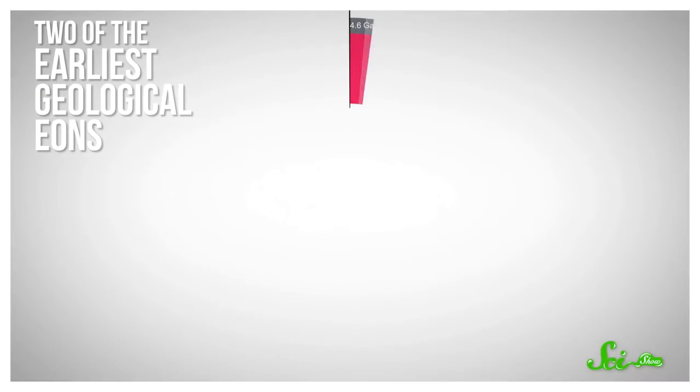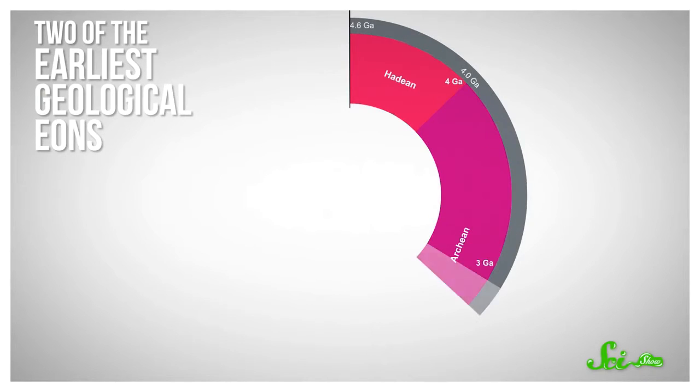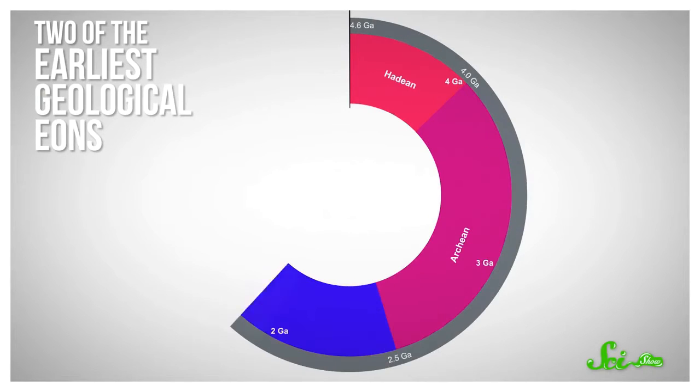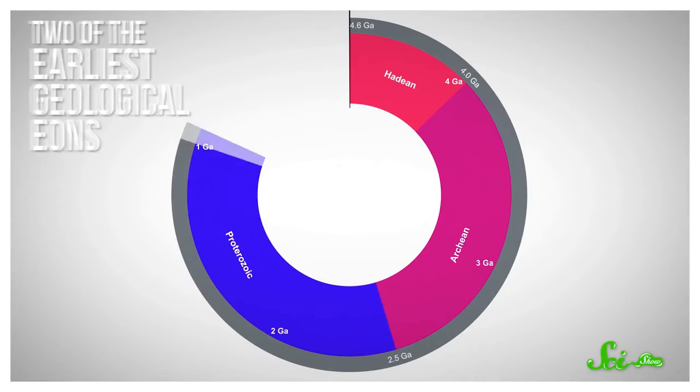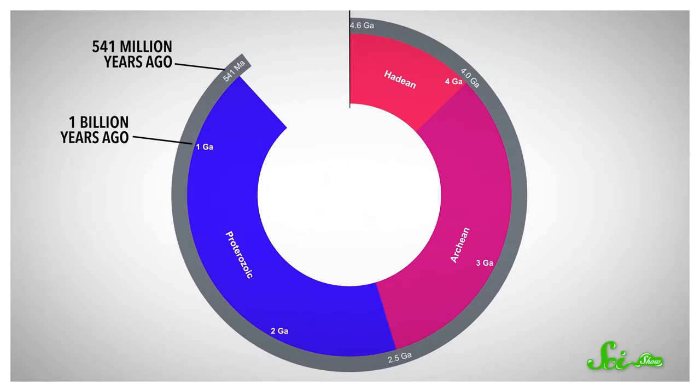The Archean Eon is the earlier of the two formal divisions of Precambrian time, spanning about 4.6 billion to 541 million years ago.